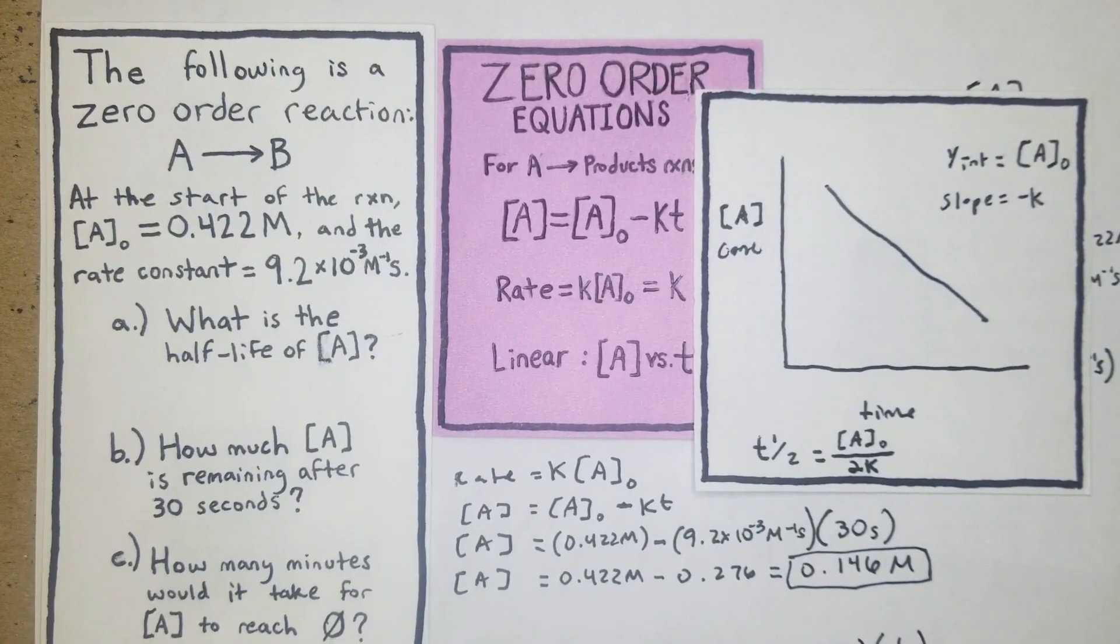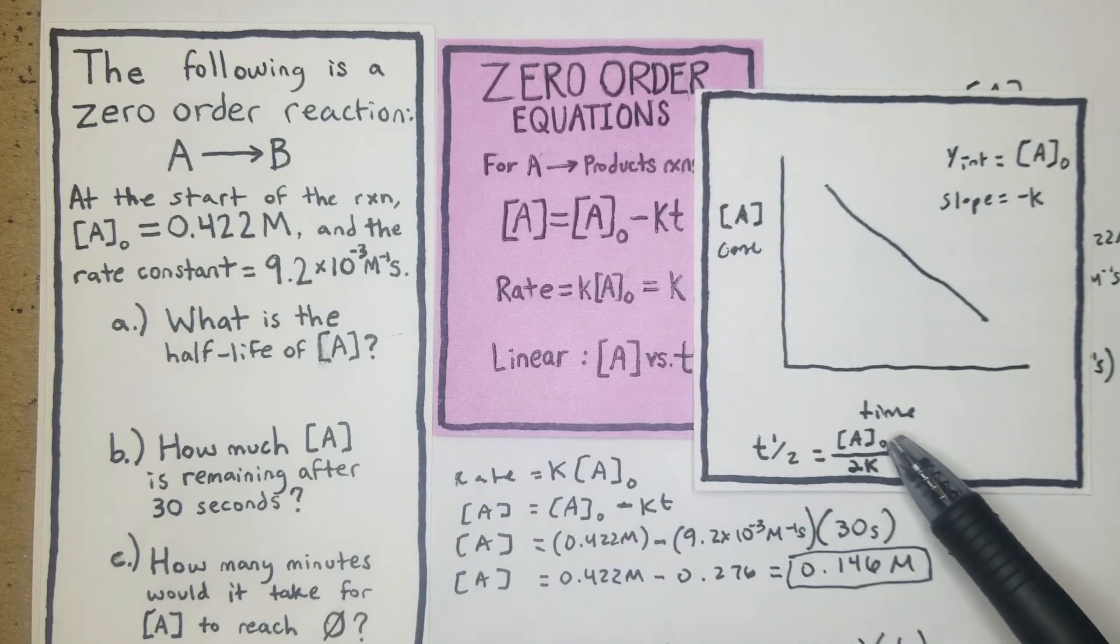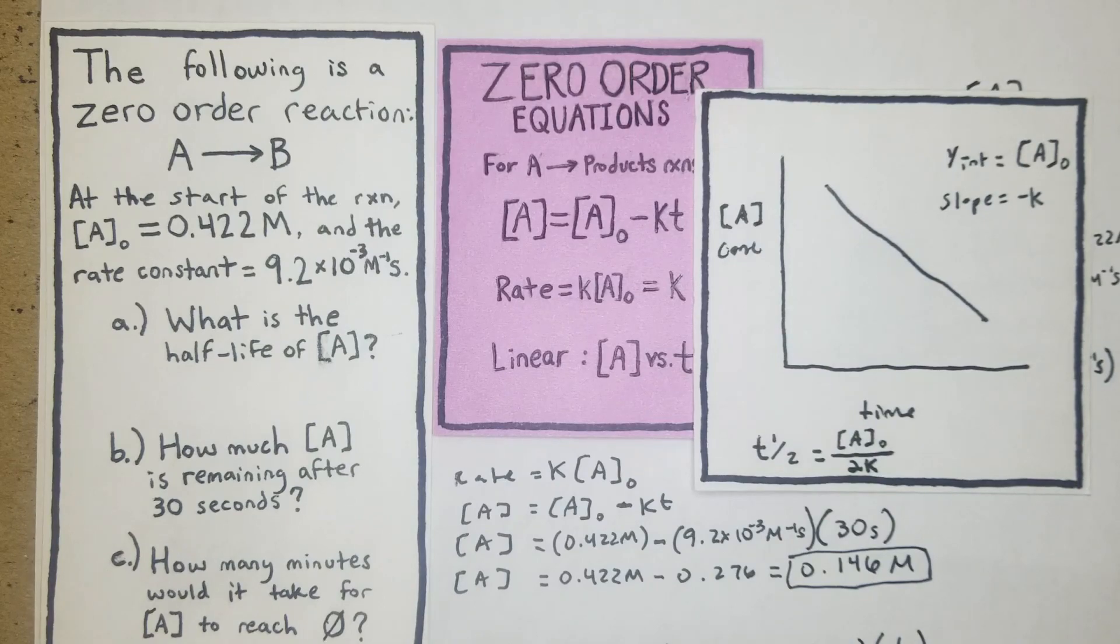what we're going to want is our concentration of A over time. Our half-life calculation is [A]₀ over 2K. So yeah, hopefully this helps a lot and I'll see you in the next one.